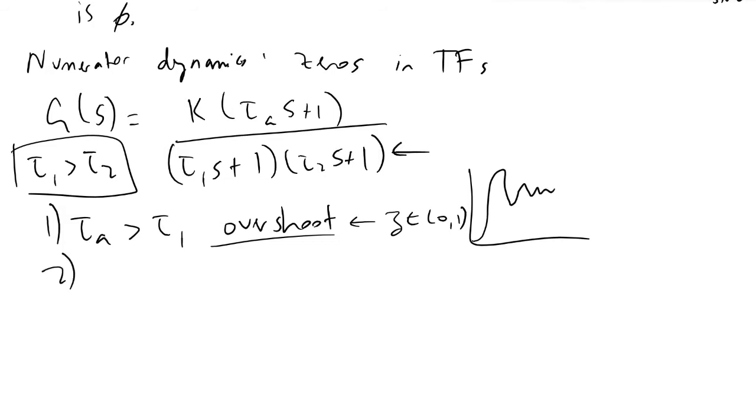If zero is less than tau_a is less than or equal to tau_1, it tells us that this is a pseudo first-order dynamic system, in which case we would in our plot see a maximum slope occurring at t equals zero.